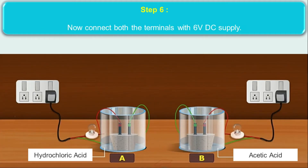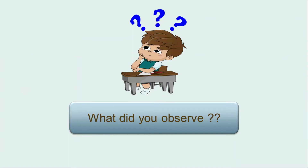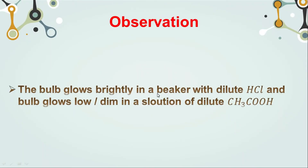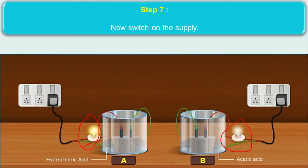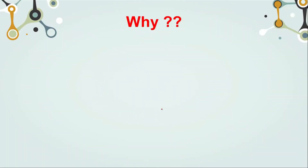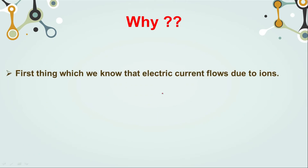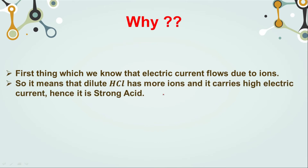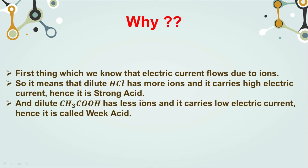Step 5: Connect both terminals of the nails to a 6-volt DC supply and switch on the supply. Observation: The bulb glows brightly in the beaker with dilute HCl, and the bulb glows low or dim in the solution of CH3COOH. The bulb in hydrochloric acid glows more than the bulb in acetic acid. This happens because electric current flows due to ions, and dilute HCl has more ions — it carries high electric current — hence it is a strong acid. Dilute CH3COOH has fewer ions and carries low electric current, hence it is called a weak acid.